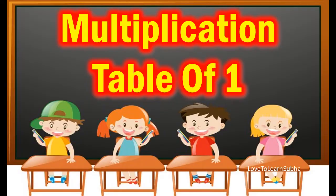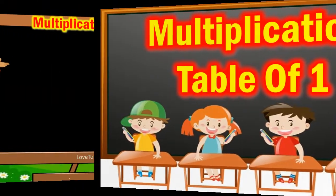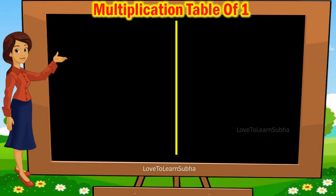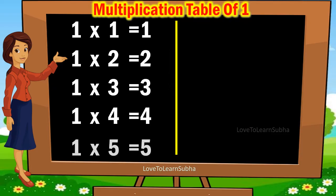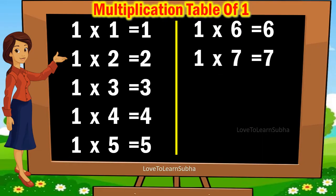Multiplication table of 1: 1 one is 1, 1 two is 2, 1 three is 3, 1 four is 4, 1 five is 5, 1 six is 6, 1 seven is 7, 1 eight is 8.